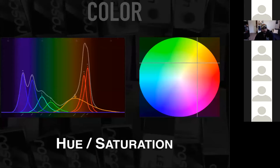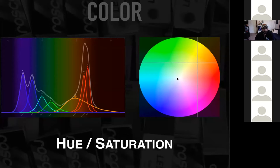Color involves hue and saturation. Think of the hue as what color it is, and the saturation as how much of that color there is. A less saturated color sits towards the center, towards white; more saturated works out towards the outsides of the color circle. So I could say magenta and mean anything in that range, then use saturation to determine how magenta it actually is.